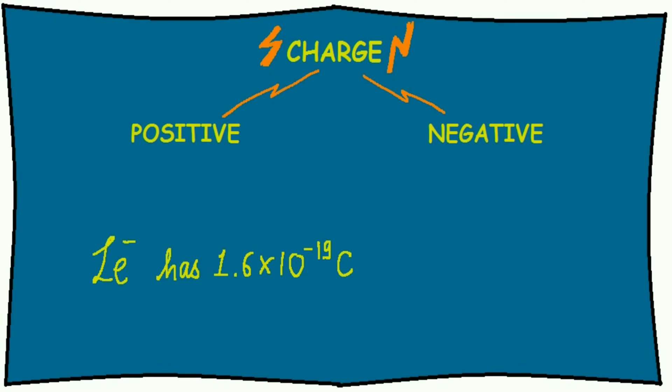Now another interesting question is how many electrons are present in 1 coulomb of charge? If you do the math, you will find there are around 6.25 × 10¹⁸ electrons in 1 coulomb of charge.